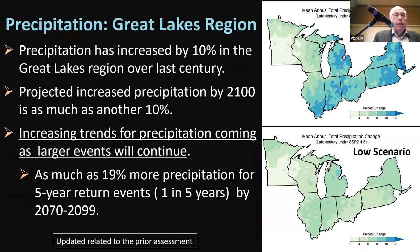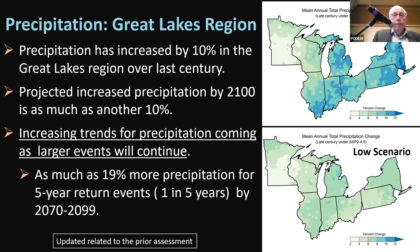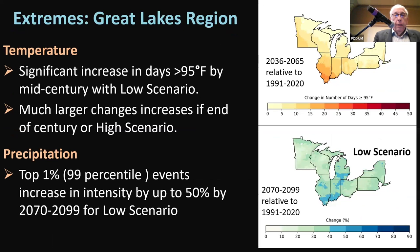Looking at precipitation: precipitation has already increased about 10% in the Great Lakes region over the last century, particularly in winter and spring. The model analysis and downscaling projects we will see another roughly 10% increase by 2100, though it does depend somewhat on scenario. More precipitation is coming as larger events — which is what we've been seeing in the past and will see more of in the future. Particularly seeing this increase in winter and spring, while summers are projected to become drier with less precipitation.